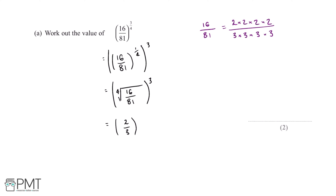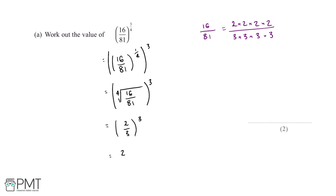Therefore the 4th root of 16 over 81 is equal to 2 over 3, and this is all cubed. The final thing we need to do is cube both the numerator and the denominator of this fraction. 2 cubed is equal to 8 and 3 cubed is equal to 27, so 16 over 81 to the power of 3 over 4 is equal to 8 over 27.